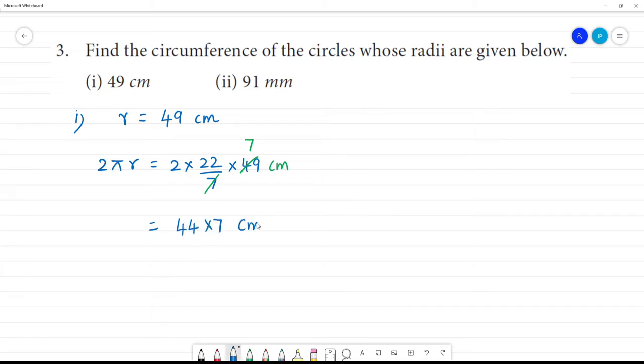7 fours are 28, remainder 2. 7 fours are 28 plus 2 is 30. 308 centimeter. Okay, second one.